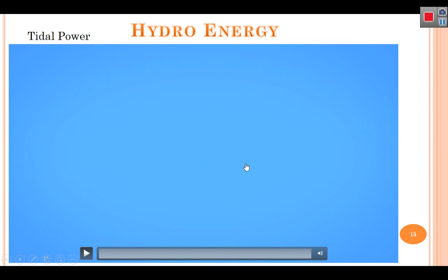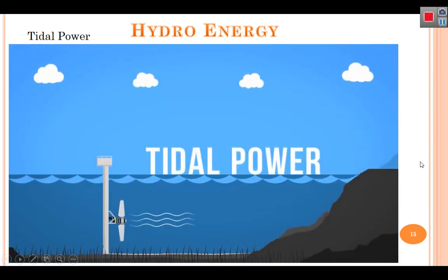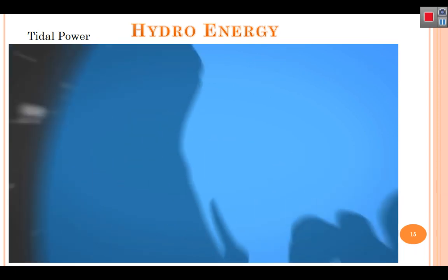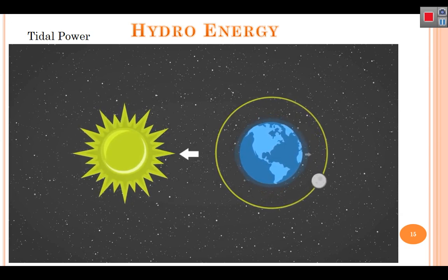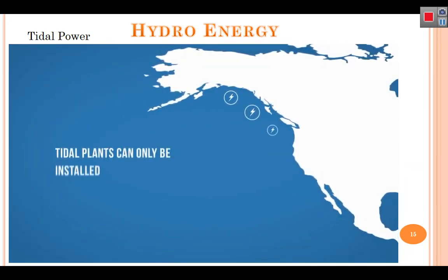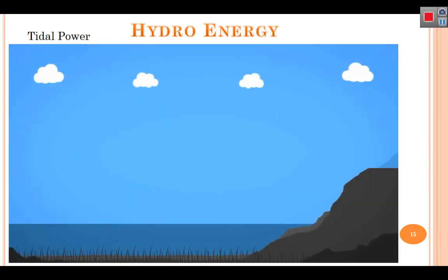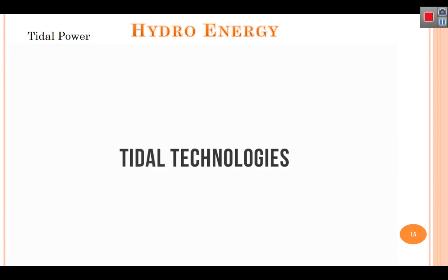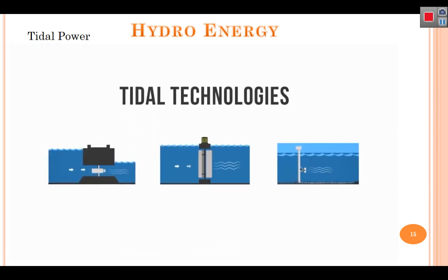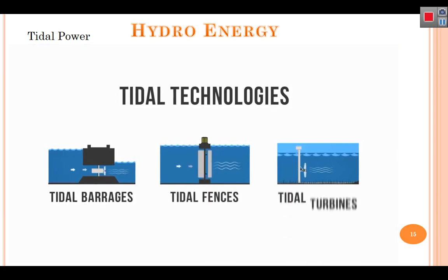Tidal power is a form of hydro power that converts the energy from the natural rise and fall of tides into electricity. Tides are caused by the combined effects of gravitational forces exerted by the moon, the sun, and the rotation of the earth. Tidal plants can only be installed along coastlines, which often experience two high tides and two low tides daily. The difference in water levels must be at least five meters to produce electricity.